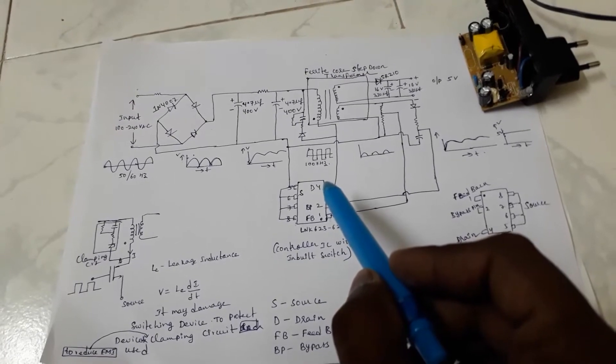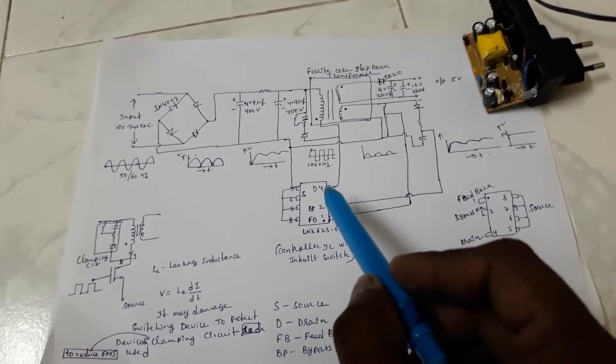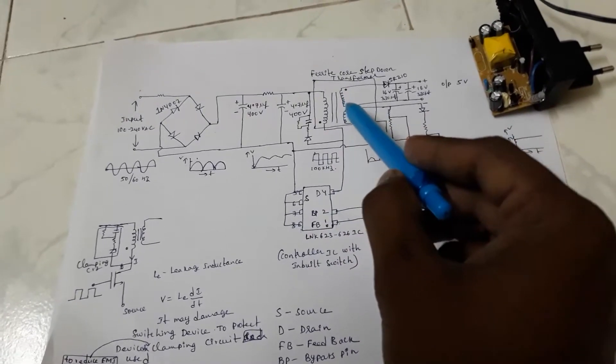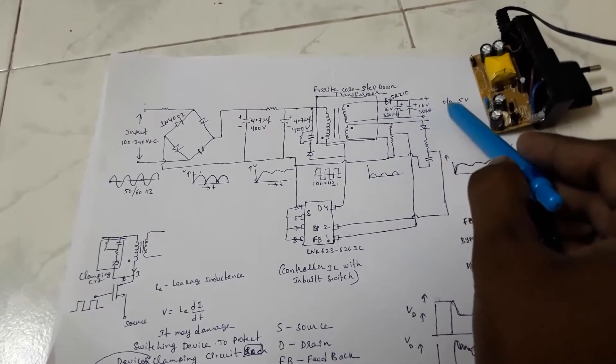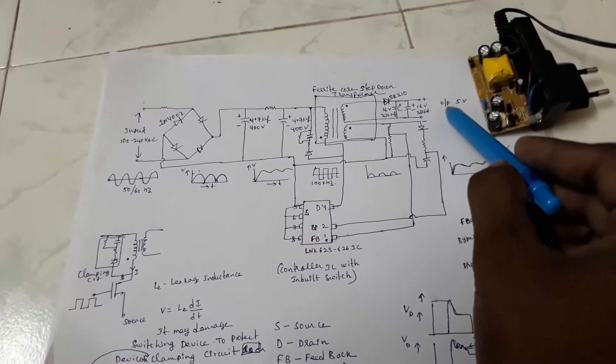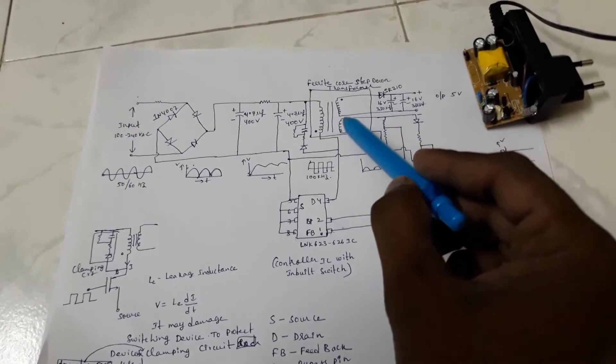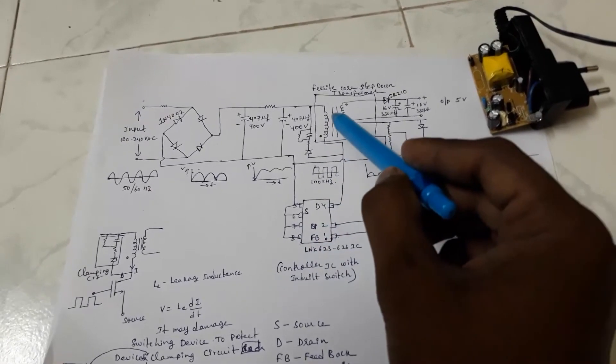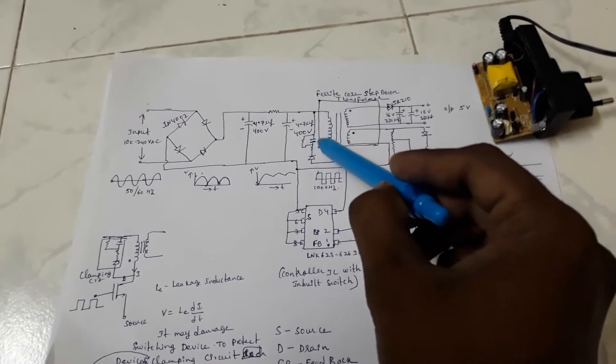The secondary of this is rectified and which is the required DC output of 5 volts. The controller has to control the primary of the transformer in order to produce the 5 volts output.